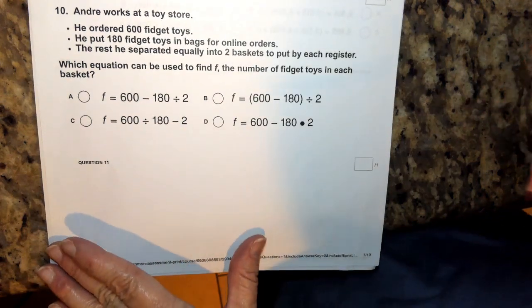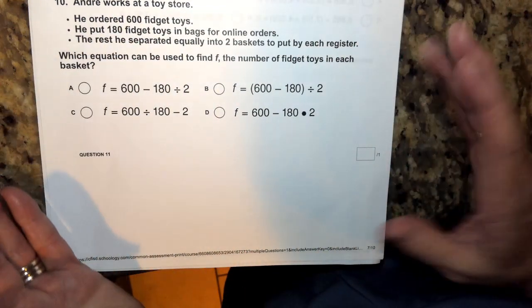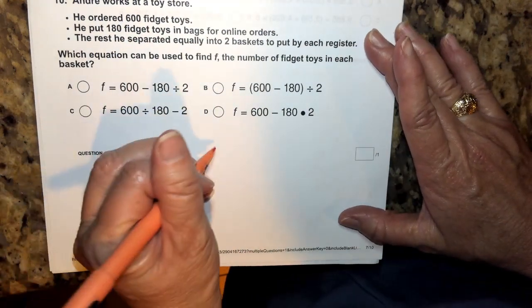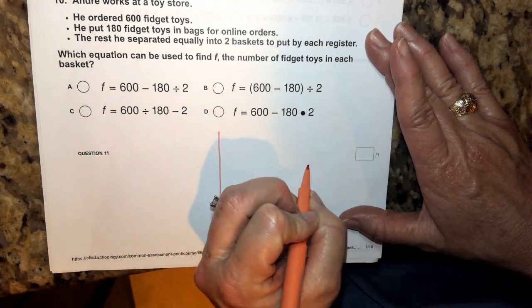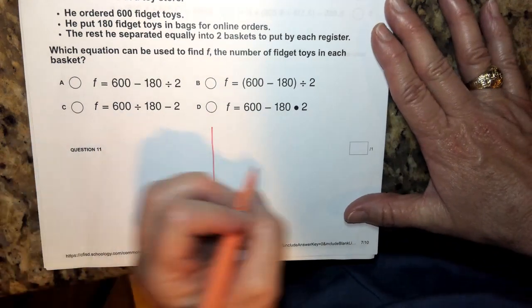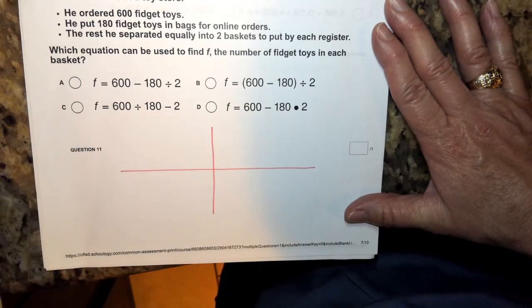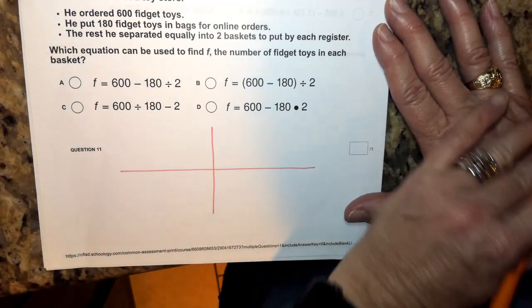So before I can do anything else, I need to take all of the information that they've given me and think about what's happening in the story. I'm going to draw a picture because sometimes a picture will help me think about what actions need to be used.